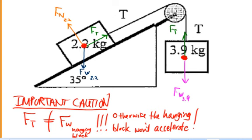We've sketched our free body diagram. Now we need to figure out the direction of the acceleration. In this problem it's pretty obvious: since the hanging block has a bigger mass than the block on the inclined plane, the system is going to accelerate in the direction of the hanging block — the hanging block accelerates downward, and the block on the inclined plane accelerates up the plane. If the block on the plane were more massive than the hanging block, you would compare the component of weight along the incline to the weight of the hanging block to determine the direction of acceleration.